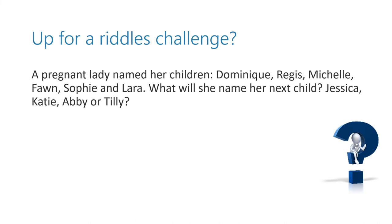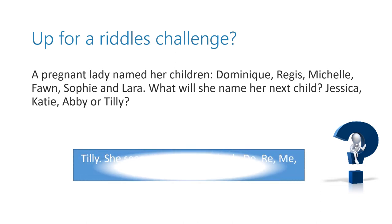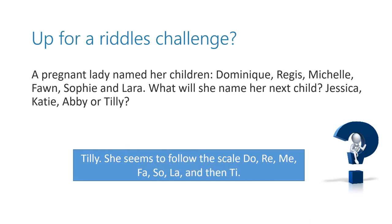And this is the last one. A pregnant lady named her children Dominique, Regis, Michelle, Fawn, Sophie, and Lara. What will she name her next child? Is it going to be Jessica, Katie, Abby, or Tilly? It's going to be Tilly because she seems to follow the musical scale: DO, RE, MI, FA, SO, LA — and then there is TI, as in Tilly.